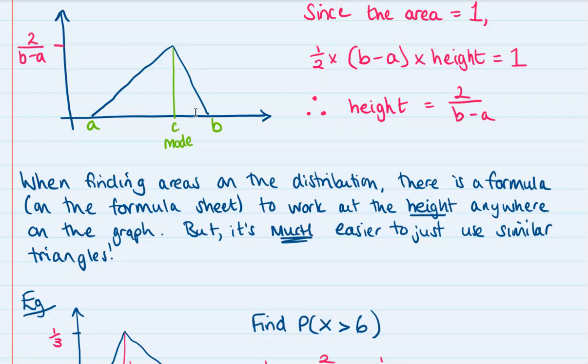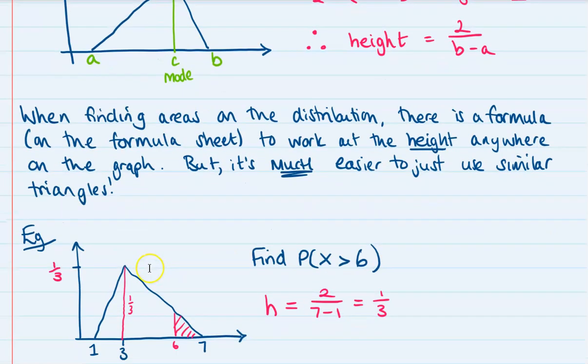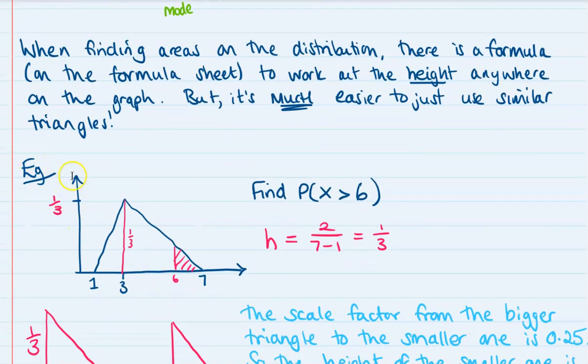Here's an example. We've got this triangular distribution that goes from 1 up to 7 with a mode of 3. First, finding the height is 2 over b minus a, which I have just done over here, and that comes to one-third. So we've got the height of the triangle as one-third, and we're being asked to find the probability that x is greater than 6. So on your diagram, mark off where 6 is and we're finding this little triangle at the end.